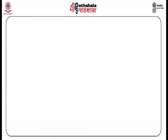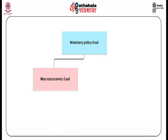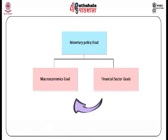Policy targets refer to the final goal and should be distinguished from intermediate targets. Monetary policy goals are of two types: macroeconomic goals — goals for the entire economy — and financial sector goals, interpreted as maintaining some type of stability in interest rates. Financial sector goals also have macroeconomic implications.